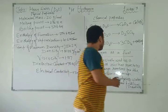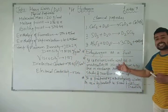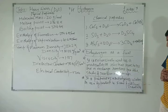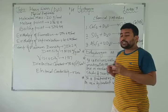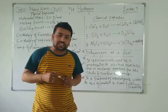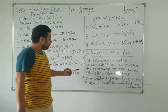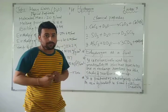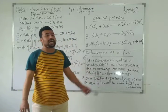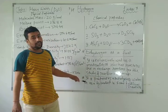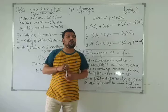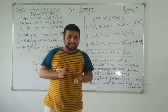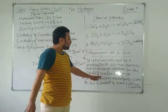Deuterium oxide is extensively used as a moderator in nuclear reactors, and it is also used in the study of exchange reaction mechanisms. Regarding preparation: deuterium oxide is prepared by the electrolysis of water and also as a byproduct in some fertilizer industries.